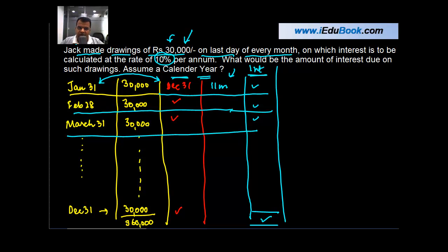One: the drawings amount is fixed. And two: the time gap between two drawings is fixed. Between January 31 and February 28 there is a time gap of one month. Similarly between February 28 and March 31, there is a time gap of one month.